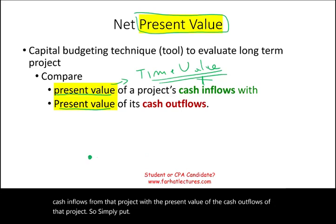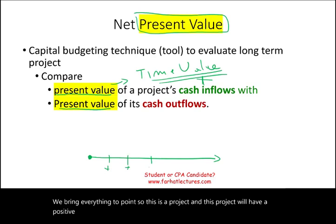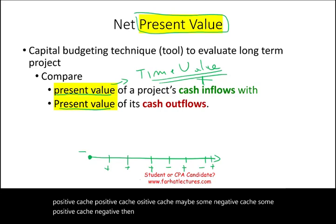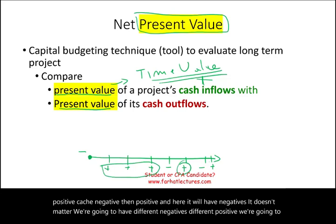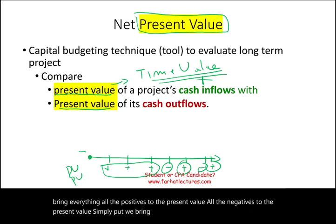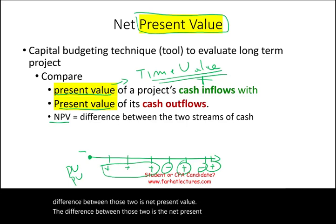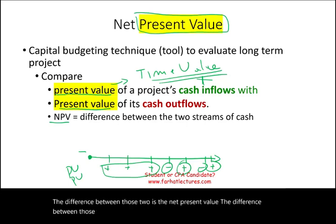Simply put, we bring everything to point zero. A project will have various positive and negative cash flows at different points in time. We bring all the positives and all the negatives to present value. The difference between those two cash streams is the net present value.